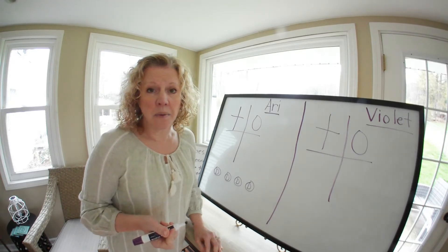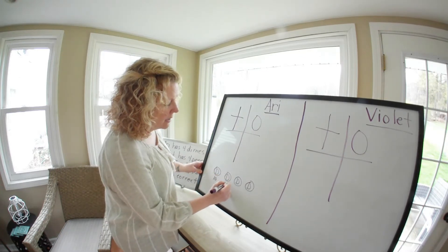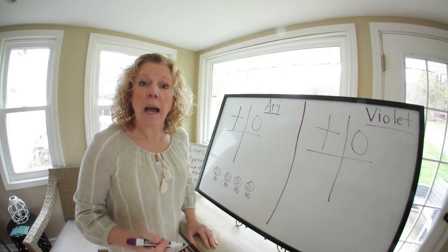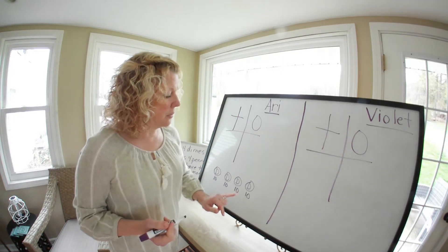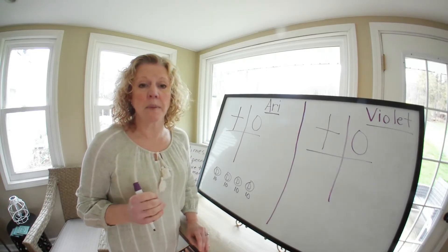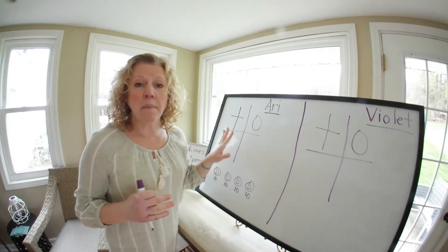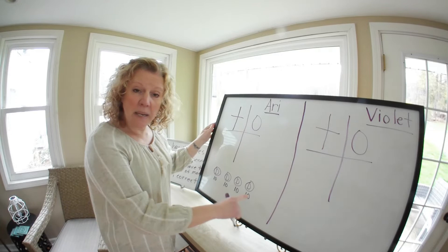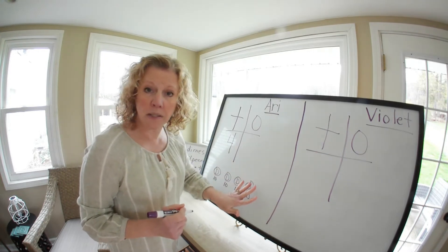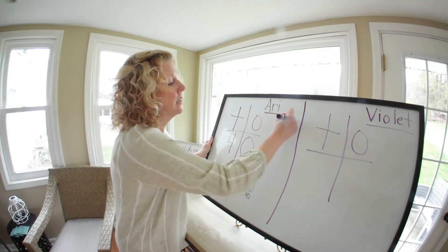Now, how much is a dime worth? If you said 10 cents, you're absolutely correct. So I'm going to put a 10 under each one. So I know I now have four tens. I can count by tens four times: ten, twenty, thirty, forty. I think Ari has 40 cents. I can prove that by filling in my tens and ones frame. How many tens do I have? We have four tens. And does he have any ones? No he doesn't, so that's going to be a zero. Ari has 40 cents.